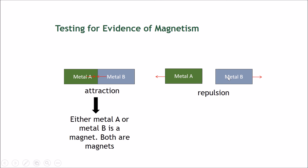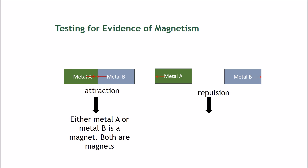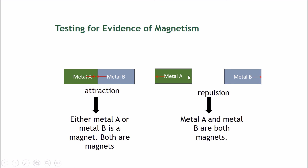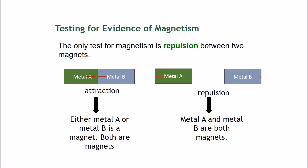Now let's look at this: metal A and metal B show repulsion. What can we conclude? We can conclude that metal A and metal B are definitely both magnets. To have repulsion, both items must be magnets, because only like poles repel. Therefore these two items must both have poles, and the two poles near each other must be like poles — if this side is north, this one must also be north. So the only test for magnetism is repulsion between two magnets.